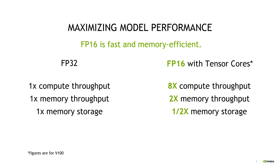We want to maximize our model performance. FP16 is fast and memory efficient. If we set FP32 as our baseline — 1x compute throughput, 1x memory throughput, 1x memory storage — FP16 is about half the size, so we need half the storage. That means half the model size in memory, or we can have twice as many layers, twice as big a batch size, or increased predictive power with the same architecture. Bandwidth-bound operations can achieve two times speed, and by taking advantage of tensor cores we can improve compute throughput by up to eight times.